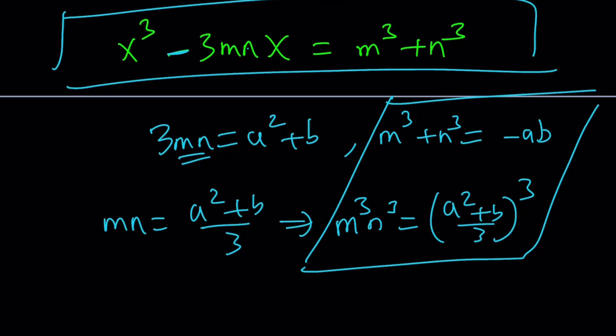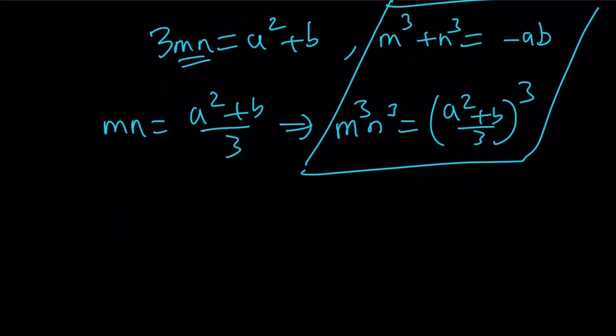And it's actually quadratic because you can go ahead and replace M³ with -ab-N³. And then plug it in here and you'll get a quadratic. Let's see what that looks like.